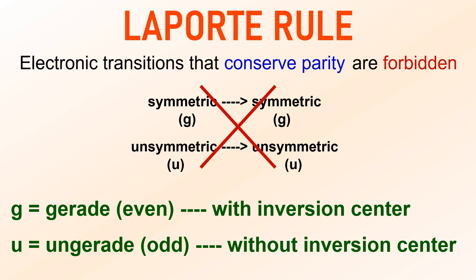A symmetric state is referred to as gerade, denoted by the letter G, while an asymmetric state is called ungerade, indicated by the letter U. The term gerade is a German word meaning 'even' and it denotes symmetric states. In contrast, ungerade translates to 'odd', referring to asymmetric states. This notation helps categorize the symmetry properties of molecular states when discussing electronic transitions.